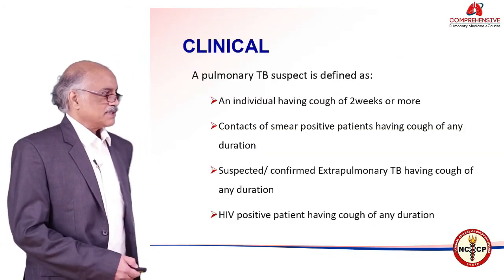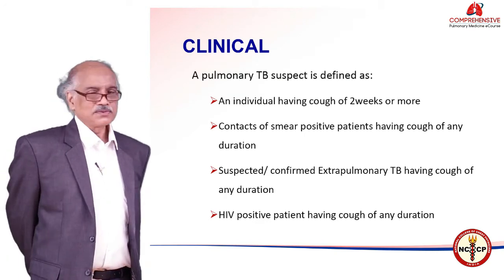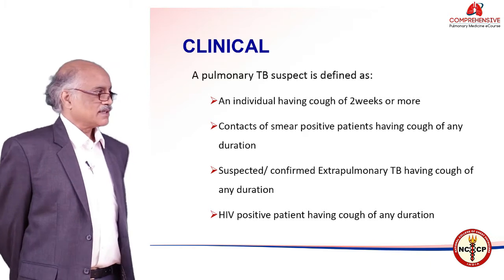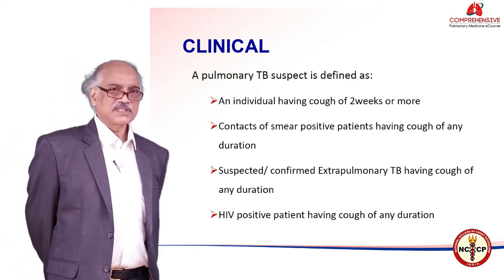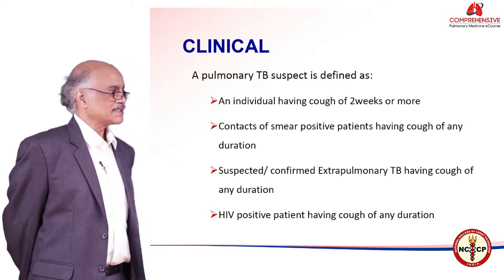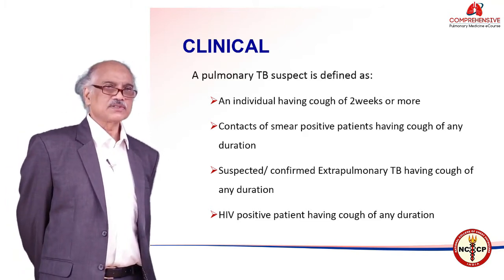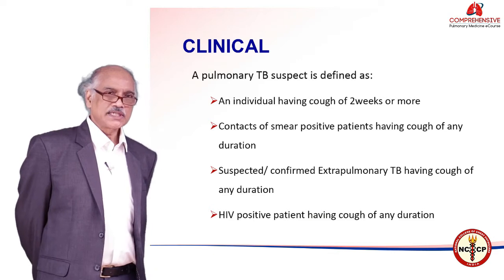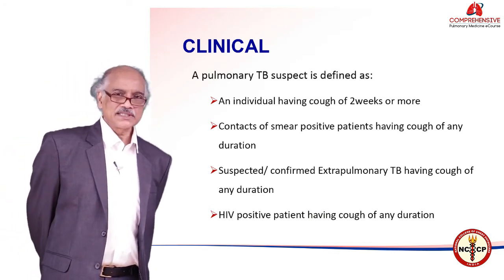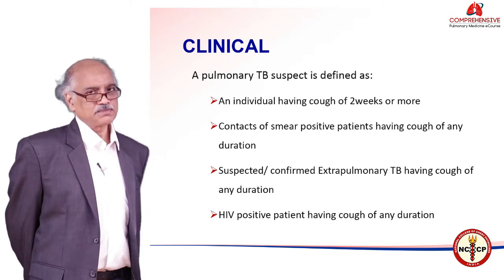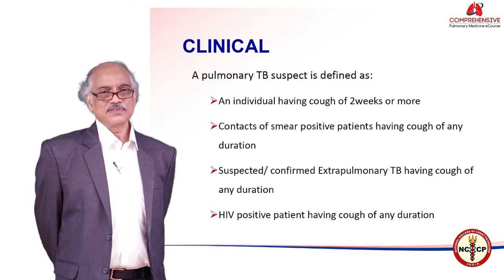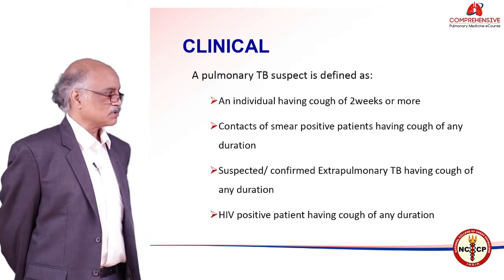The diagnosis of tuberculosis — we have been taught to begin with symptoms. Earlier it was a 3-week cough, and then it was later reduced to 2 weeks. This was largely based upon studies which showed that even 2 weeks of cough is enough to capture 90 percent of the suspect population of tuberculosis. So the duration of 2 weeks has come from those studies.